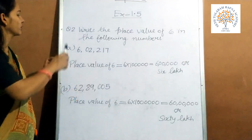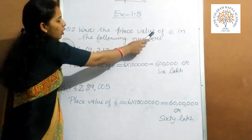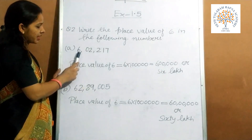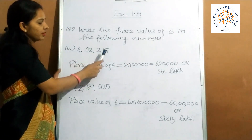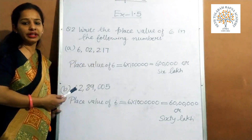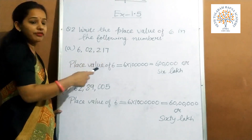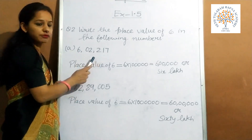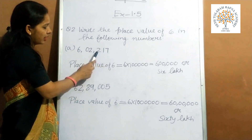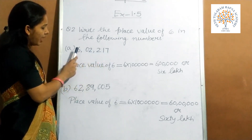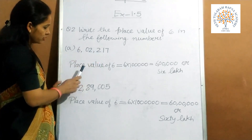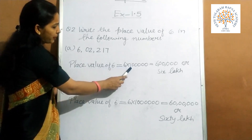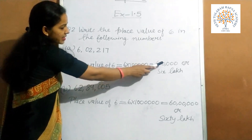Now question number 2: write the place value of 6 in the following numbers. Part a is 6,02,217. You already know that when we move to the left side, every time the value gets multiplied by 10. So according to the place value chart — 1s, 10s, 100, 1000, 10,000 and lakh. So 6 is in the lakh place.